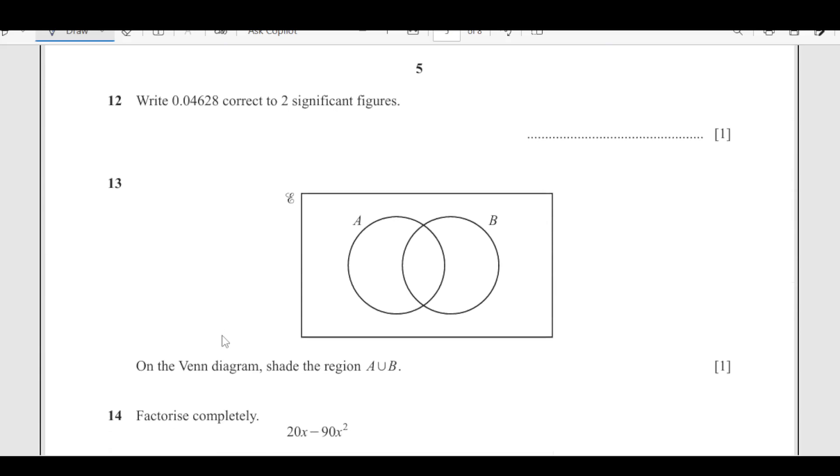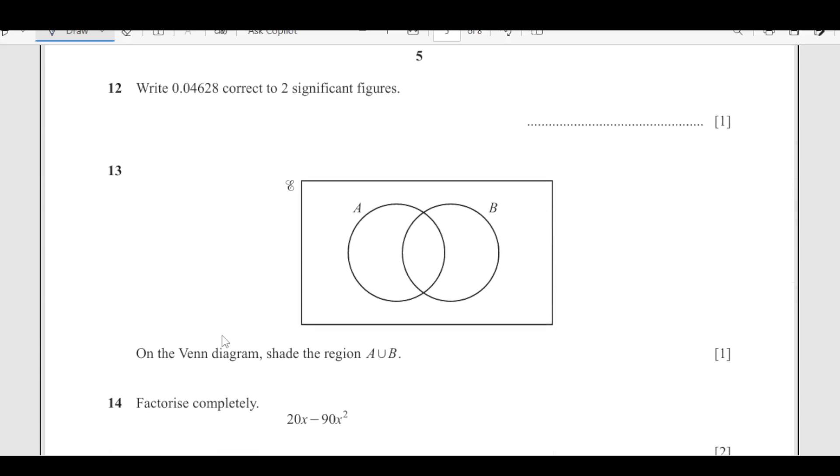Number 12, write down 0.0462 correct to 2 significant figures. 2 significant figures are going to be here, and the next number is 2, which is less than 5, so that will remain as it is. It will be 0.046.